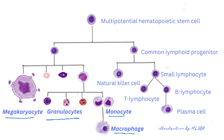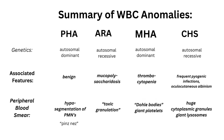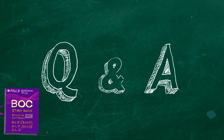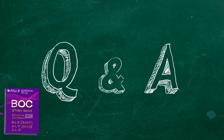In hematopoiesis, what we discussed so far involves granulocytes, monocytes, macrophages, and megakaryocytes. Here is a summary of the white blood cell anomalies and Chédiak-Higashi syndrome. And now for some Q&A that is similar to the ASCP board certification study guide.